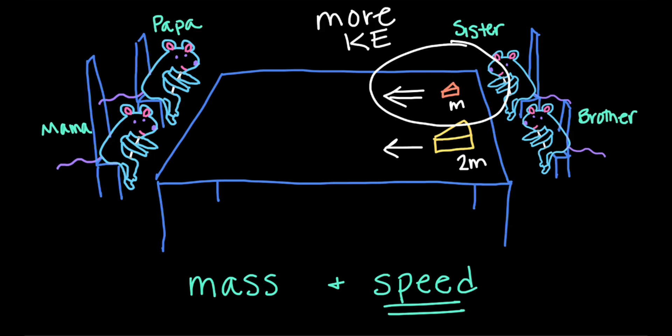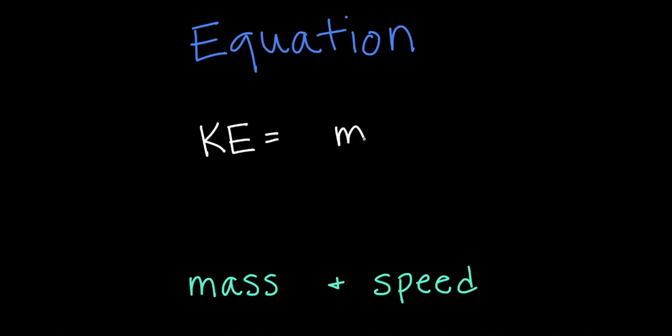This estimation of kinetic energy can be quantified in an equation that lets us calculate kinetic energy exactly. We said kinetic energy depends on the mass and the speed, which we'll write as v for velocity, so we can start with KE equals m times v. But we said that it depends more on the speed, so the velocity here is actually squared.